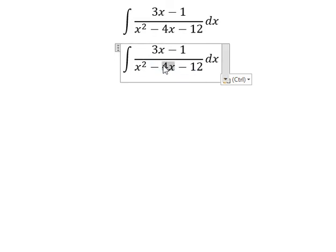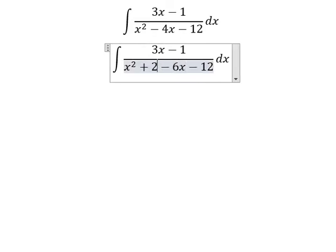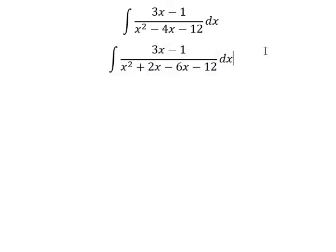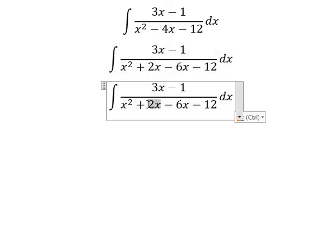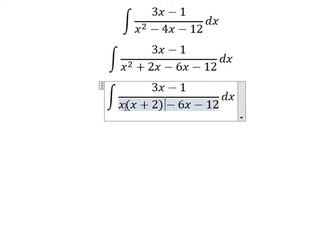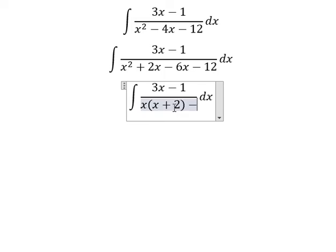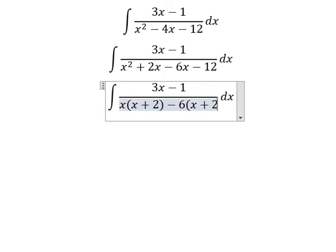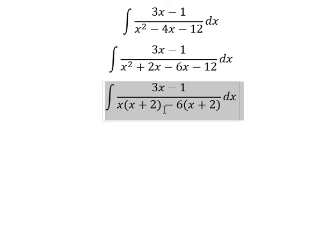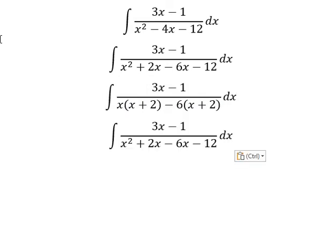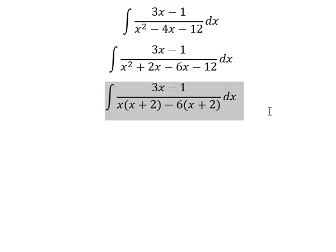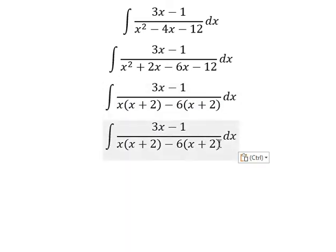I need to put into negative 6x plus 2x. Next we need to do factorization. We can factor out x from the first two terms, and then we can do another factorization by negative 6. Next we can do another factorization by x plus 2. This gives us the integral of 3x minus 1 over x plus 2 times x minus 6 dx.